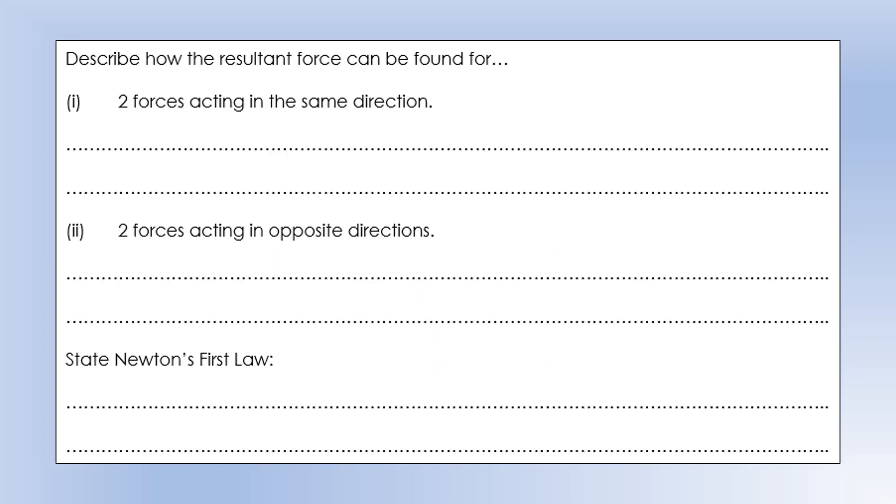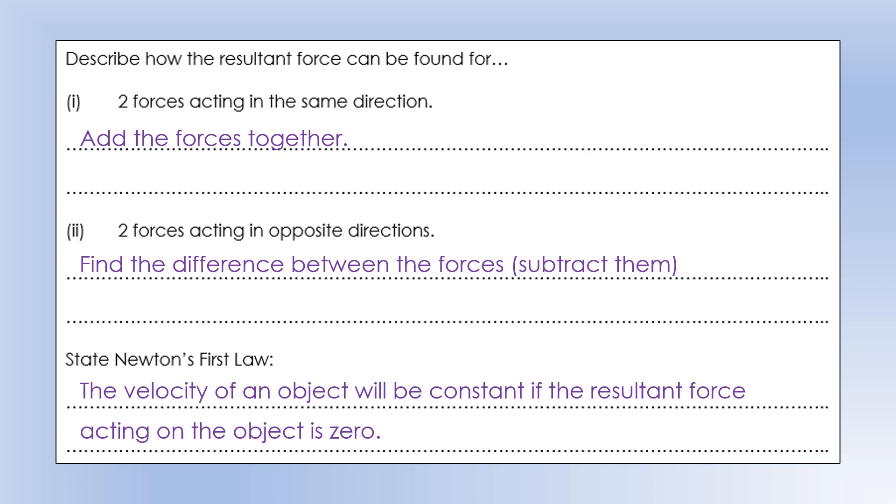Describe how the resultant force can be found for two forces acting in the same direction, you just add them together. Two forces acting in the opposite direction, you would find the difference between them, so you're subtracting them. Resultant force is useful because it blends into Newton's first law, which states that the velocity of an object will be constant if the resultant force acting on the object is zero. It doesn't mean the individual forces themselves are zero, it just means when you add together all the forces or subtract them, it's going to come up with zero.